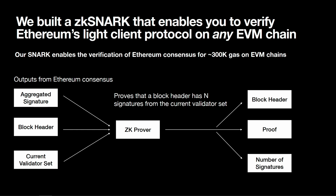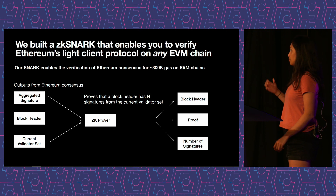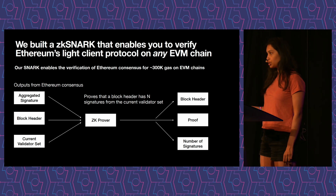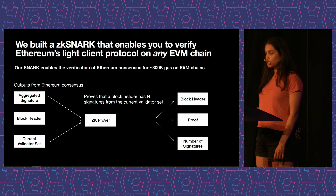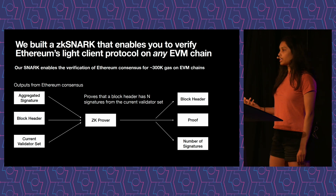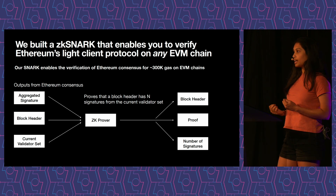How it actually works: you have Ethereum consensus going through its process, generating blocks, generating an aggregate BLS signature of all the validators, and tracking the current validator set of stakers. We take all those outputs from Ethereum consensus, put them into our ZK prover, which generates a ZK proof. The statement it's proving is that a block header has enough signatures from the current validator set. The ZK prover outputs a proof, a block header, and the number of signatures. We put all that into a light client smart contract on-chain, which can verify the proof and keep track of Ethereum's headers.